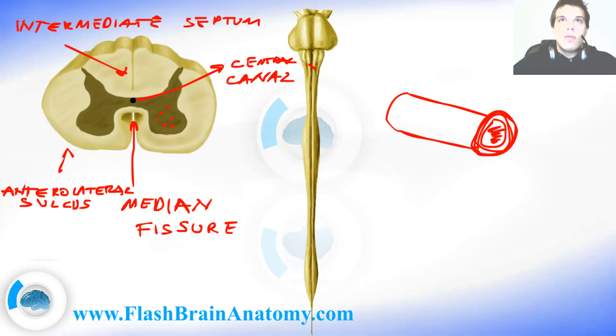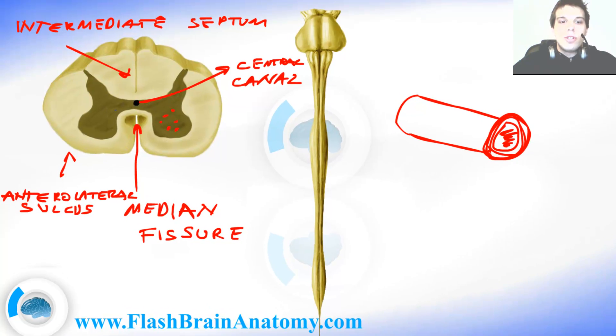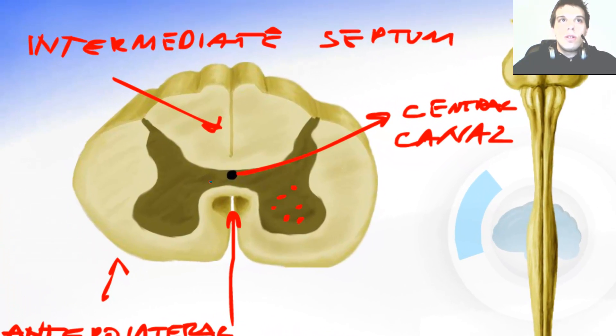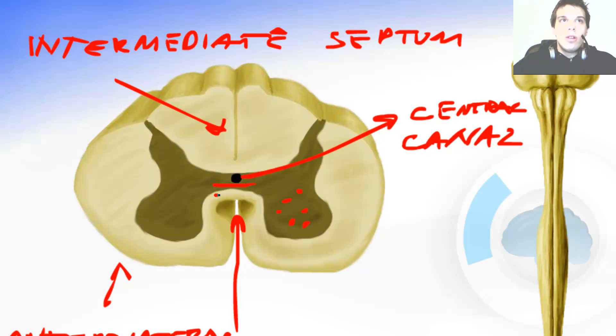Now I explained you recently about the crossing fibers in the decussation of pyramids. But along the whole length of the spinal cord there are nerve fibers that cross sides and we call these the commissures. So over here you can see the gray commissure and the white commissure. This is the place where the sides exchange fibers.